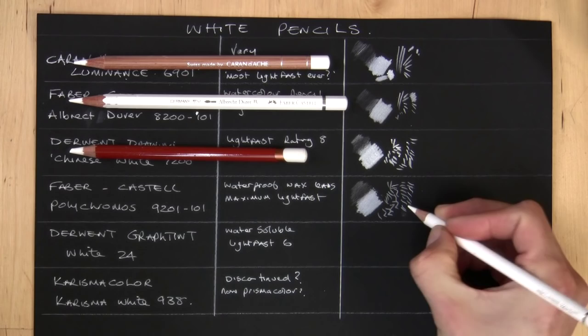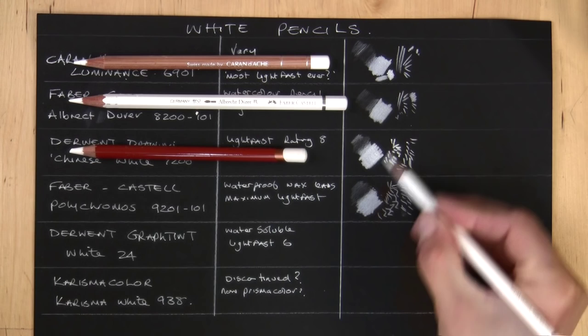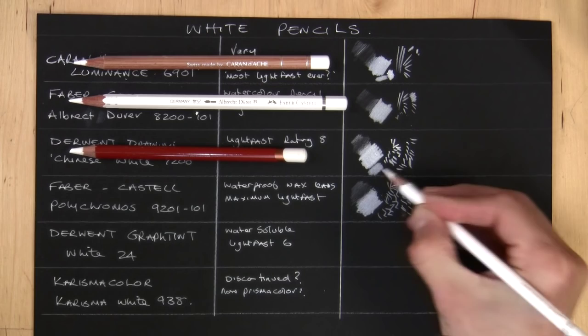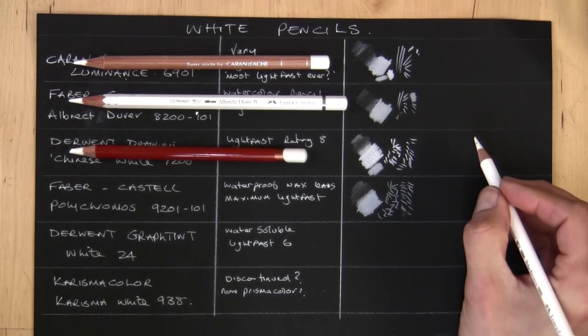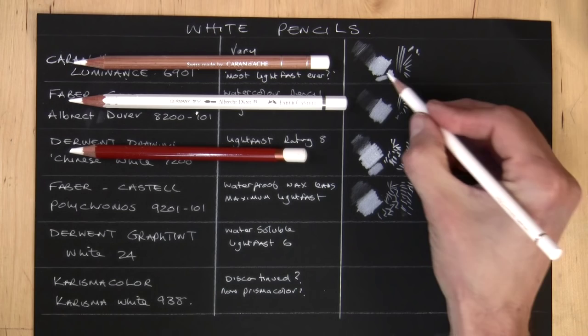It's not quite as white as some of, as perhaps the Derwent. If I put them side by side, that's when it's a bit more apparent. On its own it looks very white, but possibly the Luminance, which holds up well, you can push hard on that, and the Derwent are whiter, more opaque.